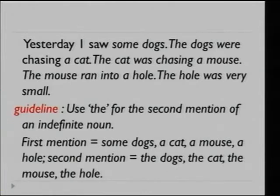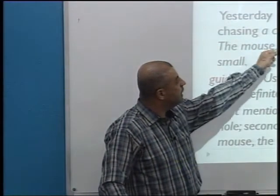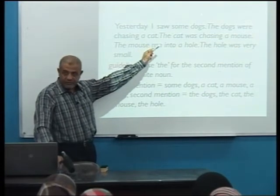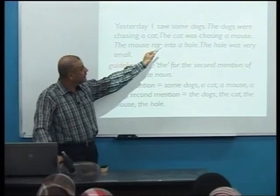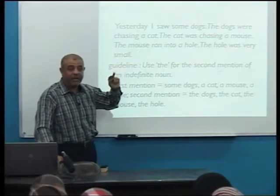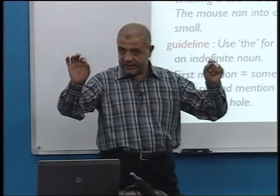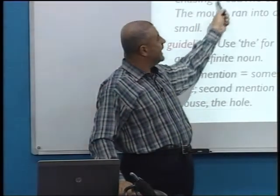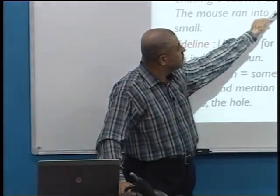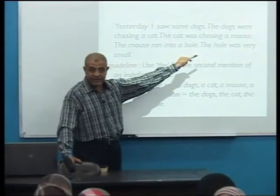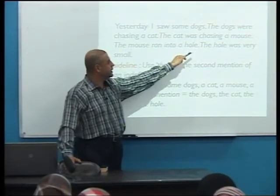Let's look at a story. 'I saw some dogs' — plural count, first mentioned. 'The dogs were chasing' — second mentioned, so we use 'the.' 'A cat' — first mentioned. 'The cat was chasing a mouse' — cat is now second mentioned; mouse is first mentioned.